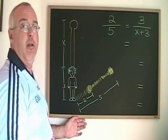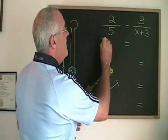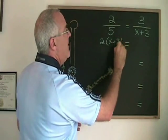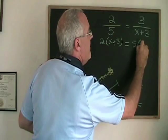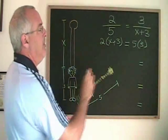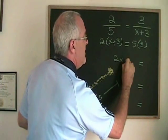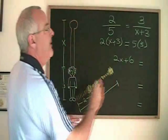Cross multiplying, top times bottom gives me two times x plus three equals bottom times top, which is five times three. Two times x plus three is two x plus six, and five times three is 15.